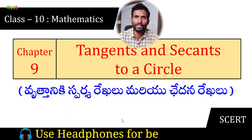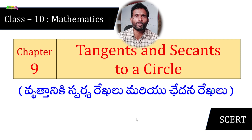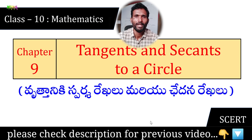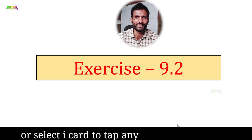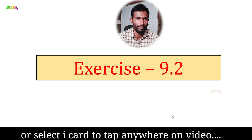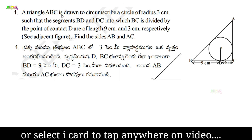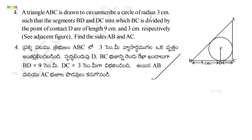Hello everyone, welcome to our channel. Today's topic is 10th class Maths, 9th chapter: Tangent and Secant to a Circle. Question number four: A triangle ABC is drawn to circumscribe a circle of radius 3 centimeters such that the segments BD and DC, into which BC is divided by the point of contact, are of length 9 centimeters and 3 centimeters respectively. Find the sides AB and AC.